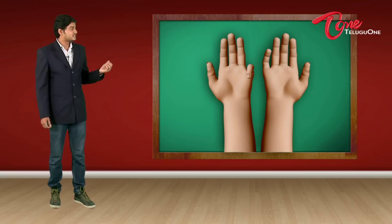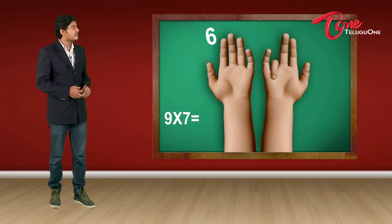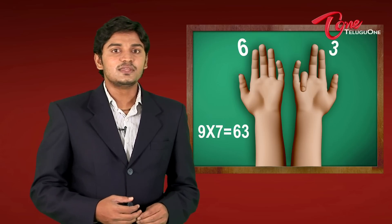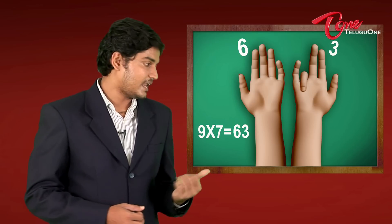Let us see another example. Suppose I want to take 9 times 7. So I'm going to close my 7th finger. So how many fingers do I have before 7? Yes, it is 6. And how many fingers do I have after 7? That is 3. So my answer comes as 9 times 7 is 63. So this way, you can find out the answer directly for any table on 9.